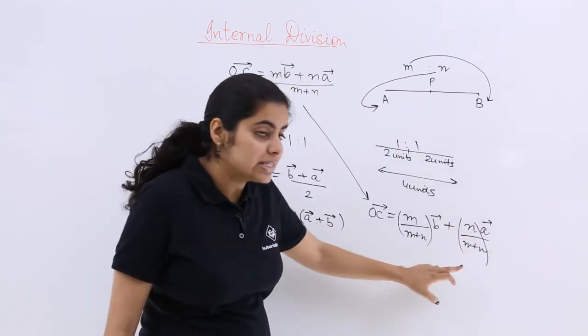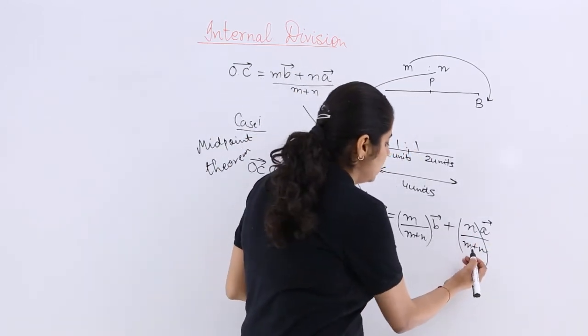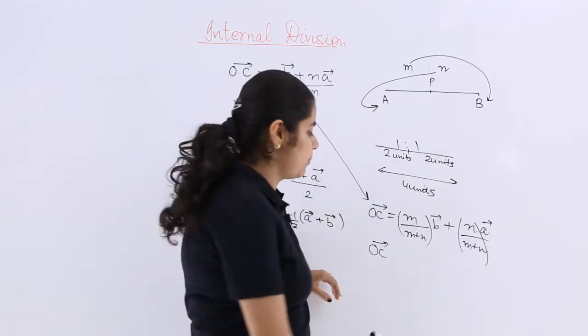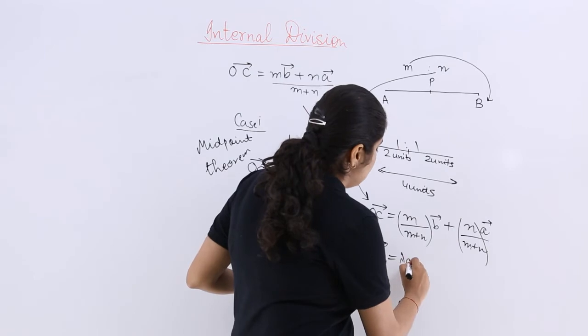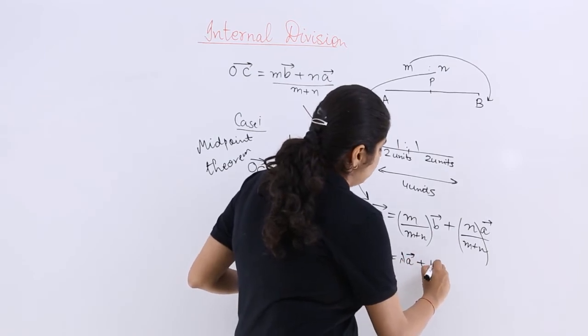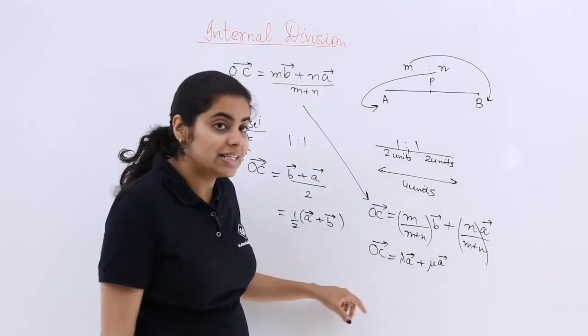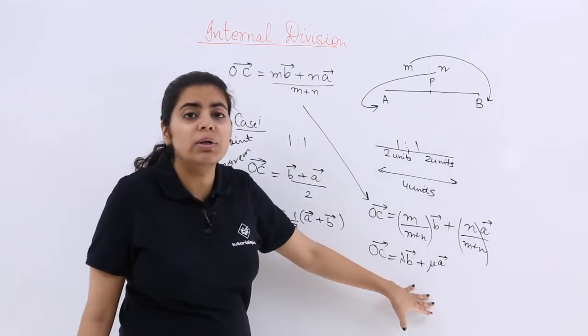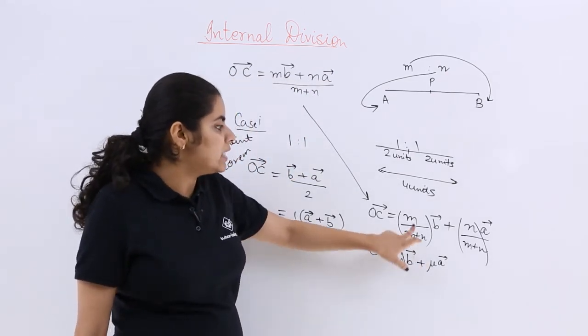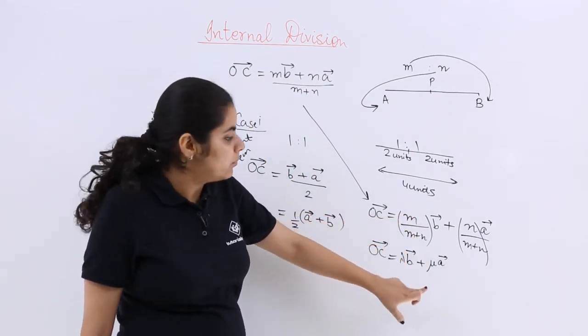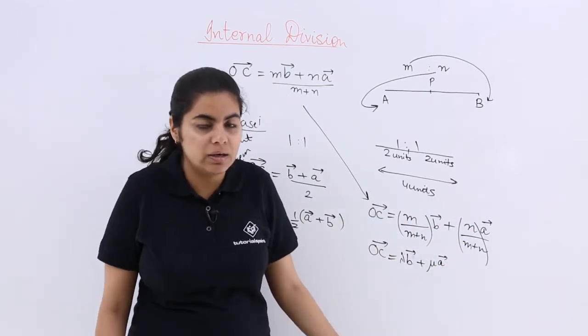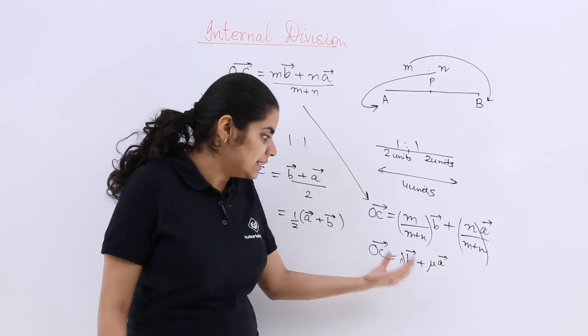Now see, this is again very important. OC vector will be what? B vector and A vector are separate. If I write it as Lambda B vector plus Mu A vector. You see that I have found out a formula where Lambda is equal to M upon M plus N, where Mu is equal to N upon M plus N. So the position vector can be specifically written like this where Lambda is M upon M plus N, Mu is N upon M plus N.